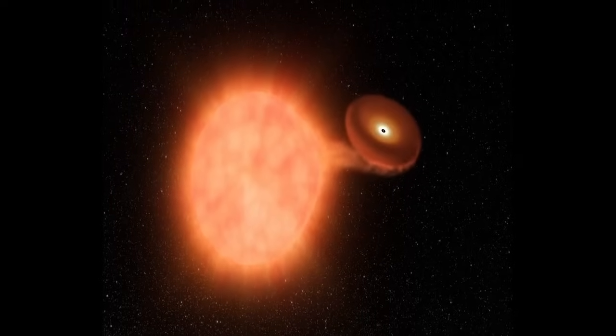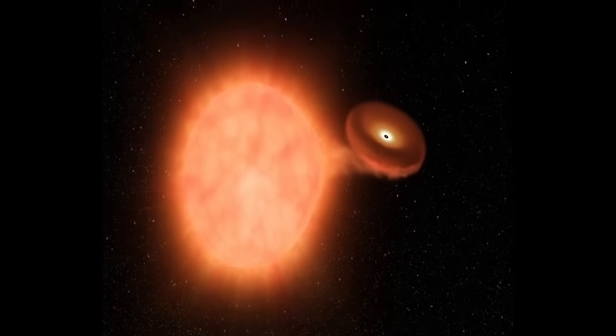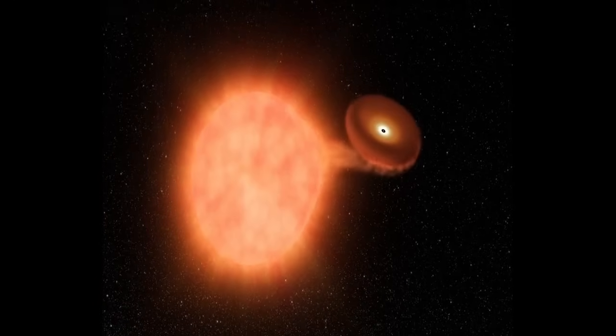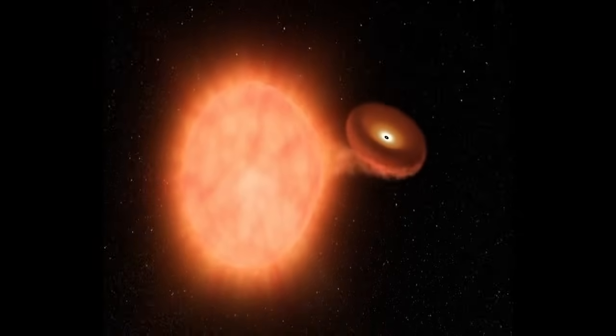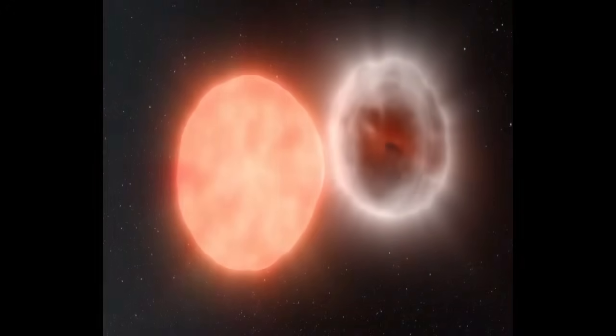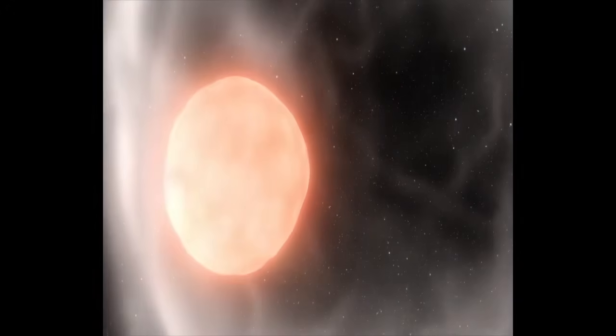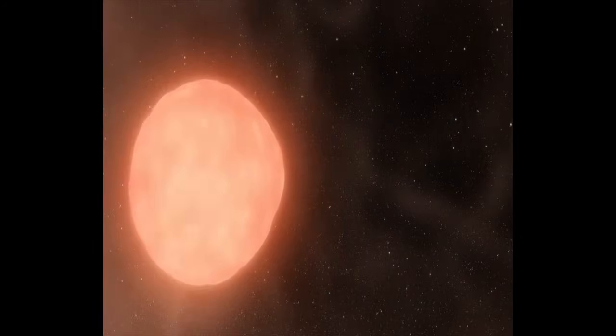The next, and currently final, step is Type Ia Supernovae. A Type Ia Supernovae is when a white dwarf orbits a still-living star, gradually siphoning off its material until, upon reaching a specific critical mass, it explodes in a supernova. Because that critical mass is always the same, all Type Ia Supernovae possess the same brightness. The farthest Type Ia Supernovae measured to date is about 16.5 billion light years away.